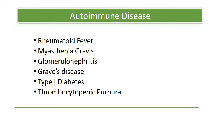Another example is Graves' disease, where autoantibodies bind to thyroid cells, stimulate them, and cause hyperthyroidism — increased secretion of thyroid hormone. A common example is insulin-dependent diabetes mellitus, in which antibodies damage the beta cells that produce insulin, causing type 1 diabetes during infancy. Another is thrombocytopenic purpura, in which autoantibodies react with platelets.